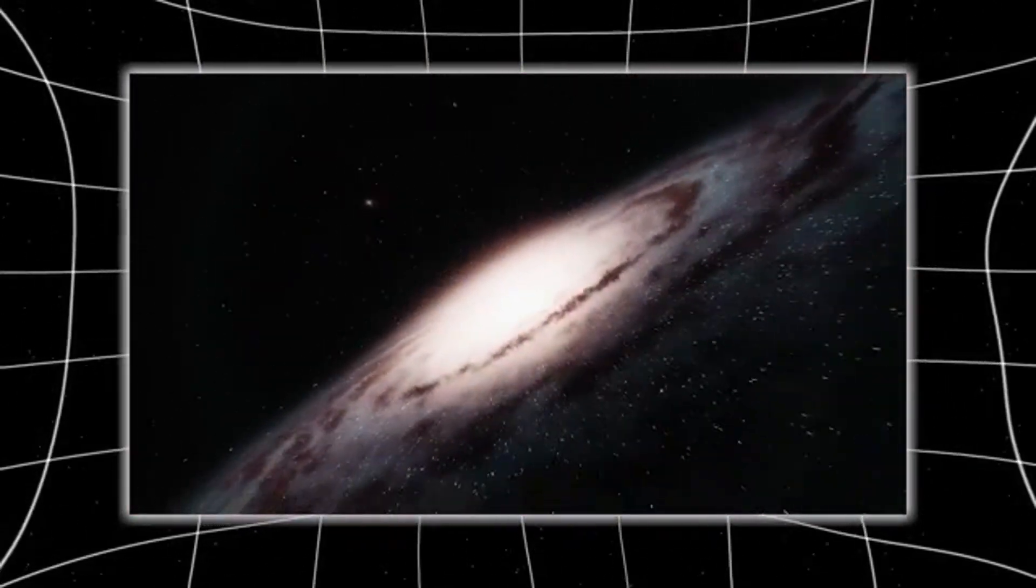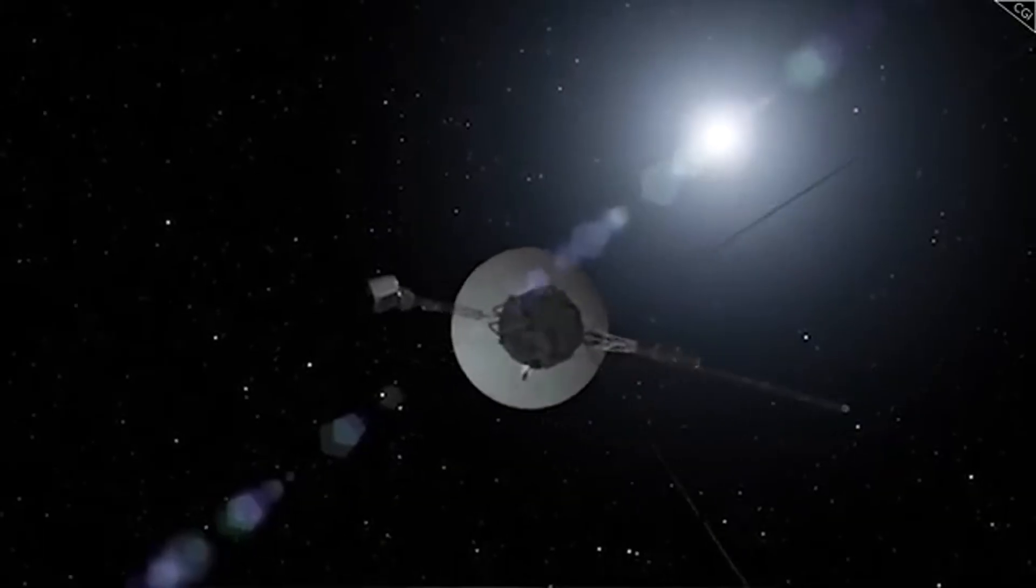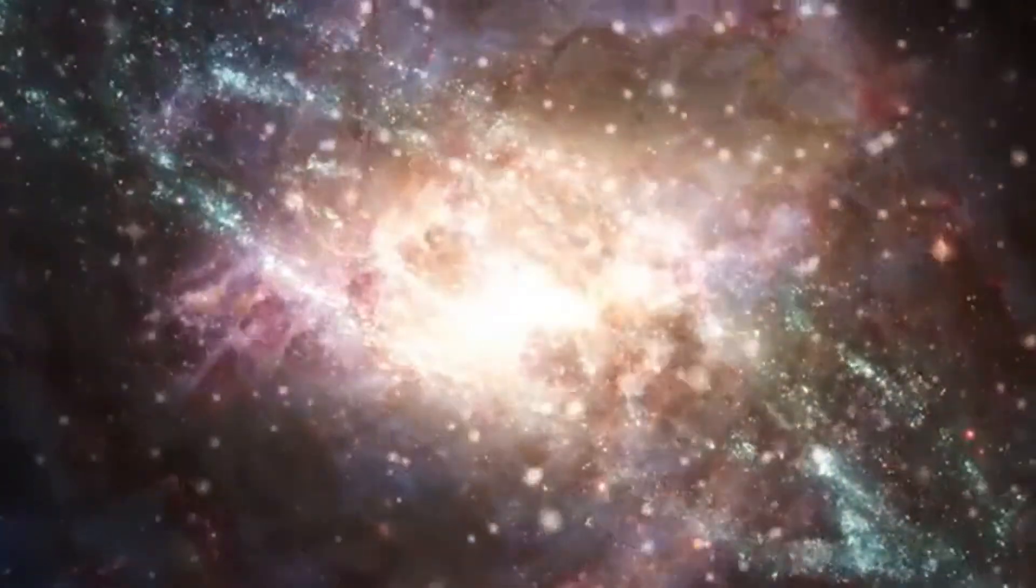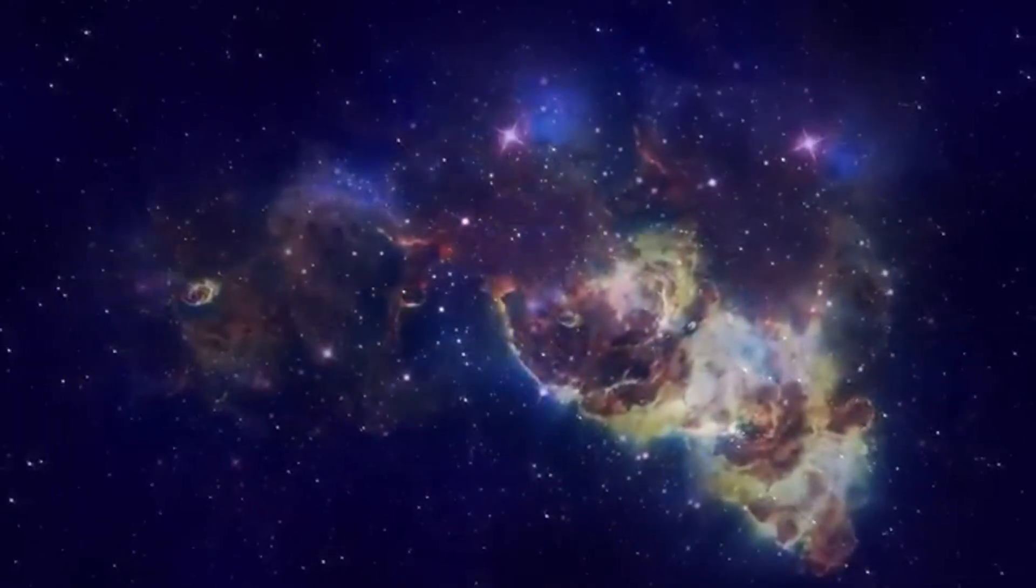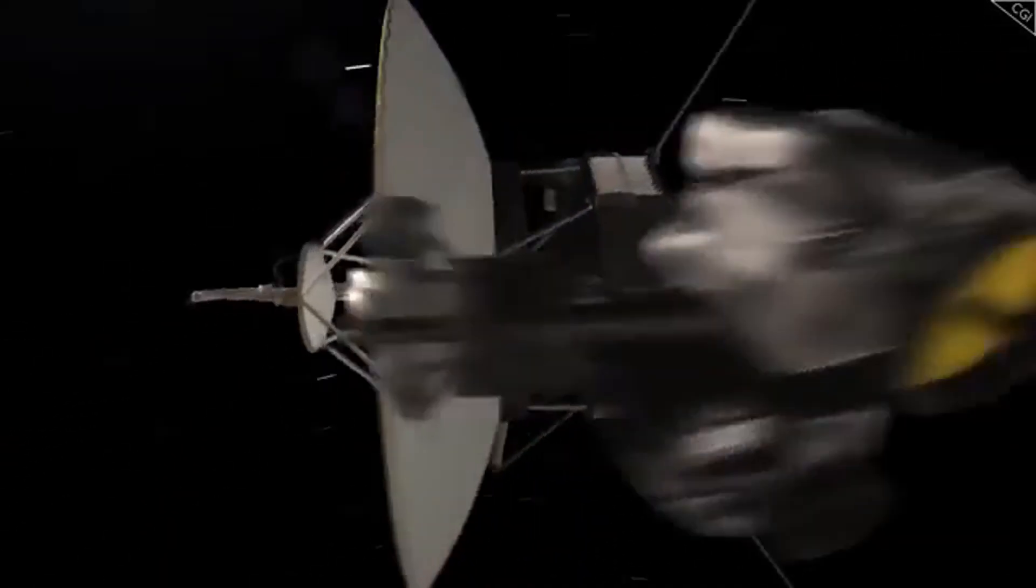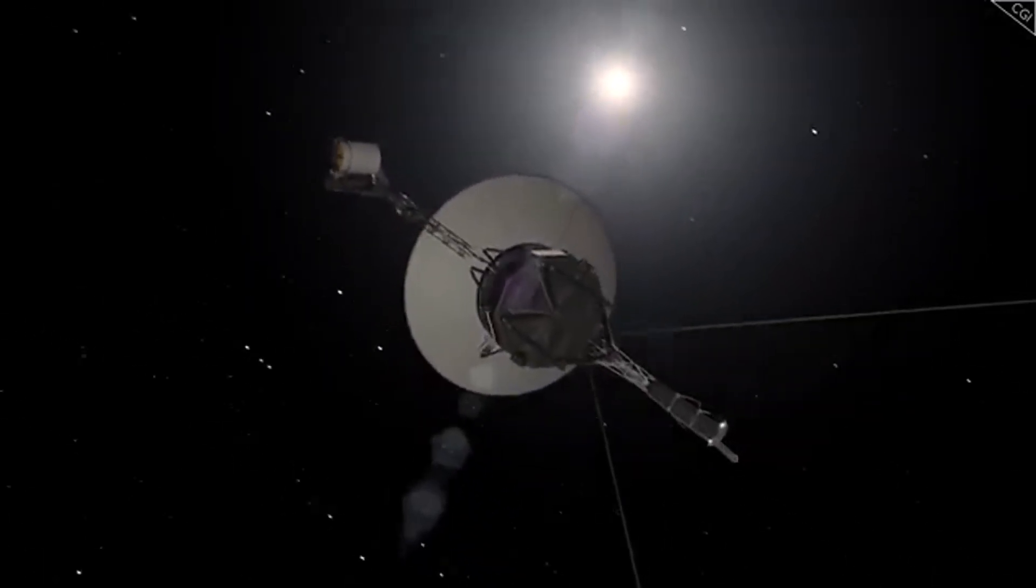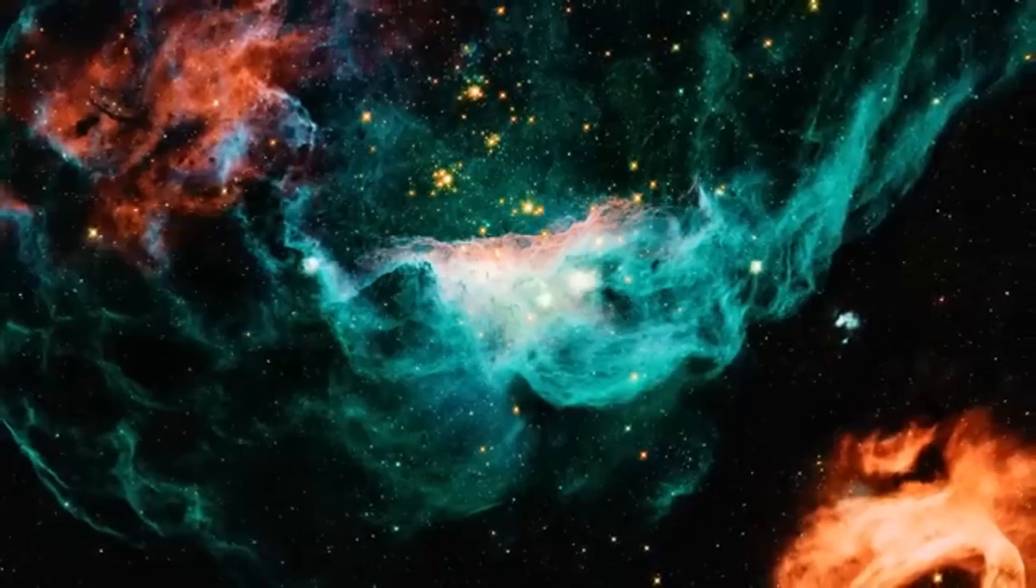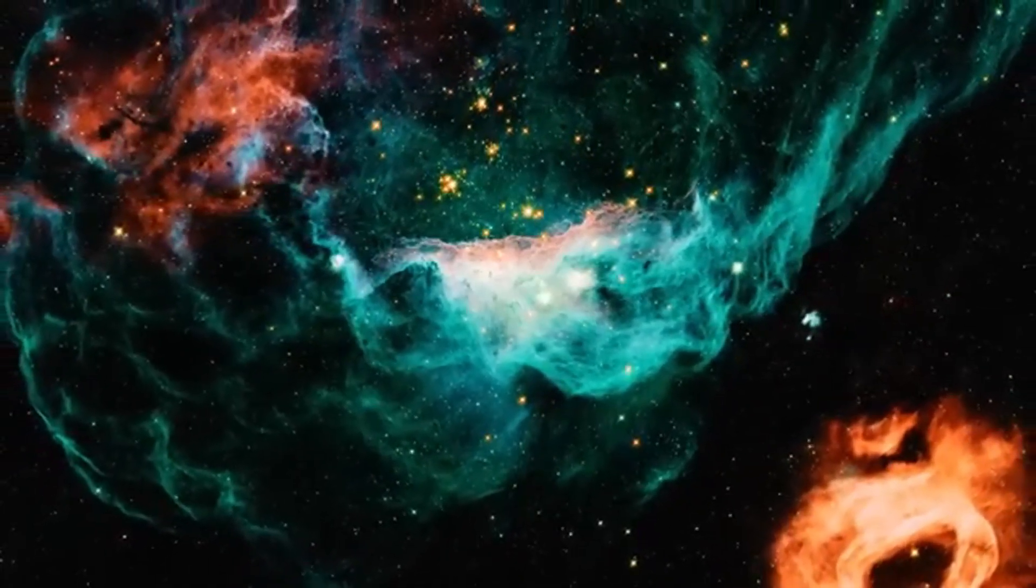Voyager found it had crossed one such threshold, a sharp spike in high-energy particles accelerated by distant black holes and supernovae, slamming into the probe at near-light speed. These weren't gradual changes. They were abrupt, sharp, like stepping from one biome into another. We used to think the sun's heliosphere was a soft gradient fading into space. But Voyager proved otherwise. It's not a shoreline. It's a cliff. And beyond it, the rules change.